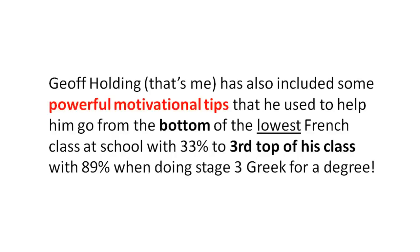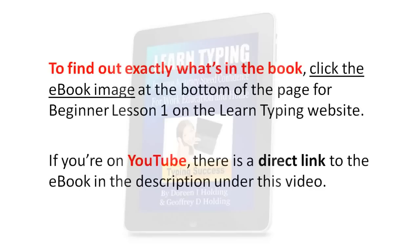Jeff Holding — that's me — has also included some powerful motivational tips that helped him go from the bottom of his French class with 33% to third in the class with 89% when doing Stage 3 Greek for a degree. To find out exactly what's in the book and all the details, click the ebook image at the bottom of the page for Beginner Lesson 1 on the LearnTyping website. If you're on YouTube, there's a direct link to the ebook in the description under this video.